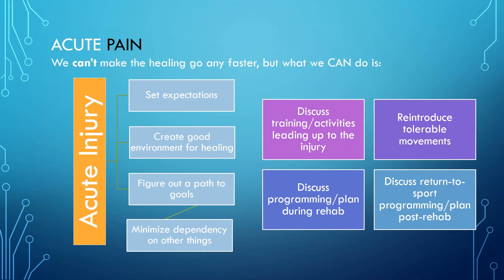Discuss programming and the plan during and after rehab. Even if a patient comes three times a week for an hour — that's three hours weekly — team sports may require five days a week at two and a half hours each, a big discrepancy. Gabbett's research on acute and chronic workload ratios identifies a sweet spot that helps reduce injury risk. We need to make sure athletes don't re-injure by going from very low to very high load too quickly.